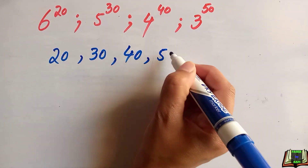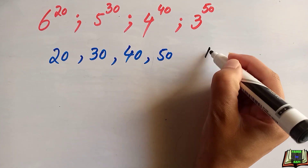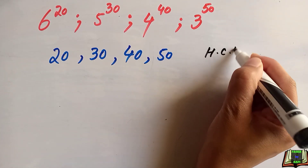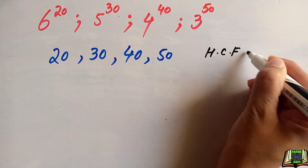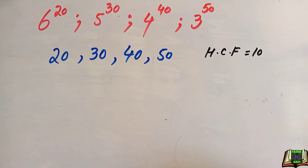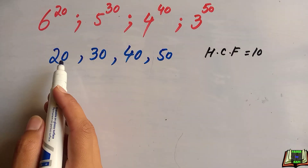The powers are 20, 30, 40, and 50. We can see that the highest common factor of these four numbers is equal to 10. So we are going to change the original numbers into expressions with power 10.